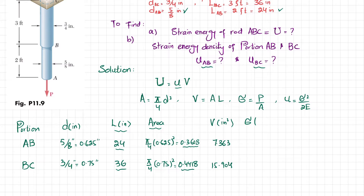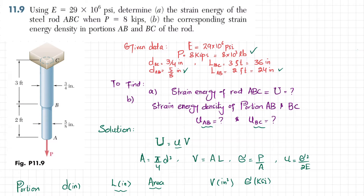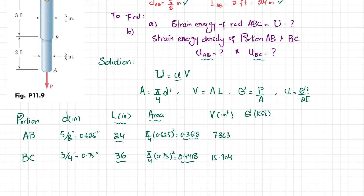Next, calculating stress in each rod, with units in ksi. Stress equals P divided by area. P is 8 kips. For rod AB: 8 divided by the area gives stress of 26.08 ksi. For rod BC: 8 divided by the area of BC gives 18.11 ksi.